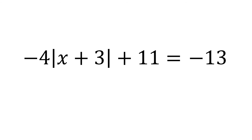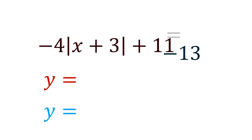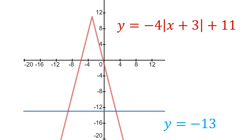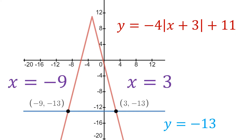In this second example, we have a longer equation: negative 4 times the absolute value of x plus 3, plus 11, all equal to negative 13. We're going to do the same thing — take each side of that equation and set y equal to it. So we have the absolute value function in red and the constant function in blue. Once again, there are two points of intersection, at (-9, -13) and (3, -13). So the x-coordinates give us x equals negative 9, and x equals 3.